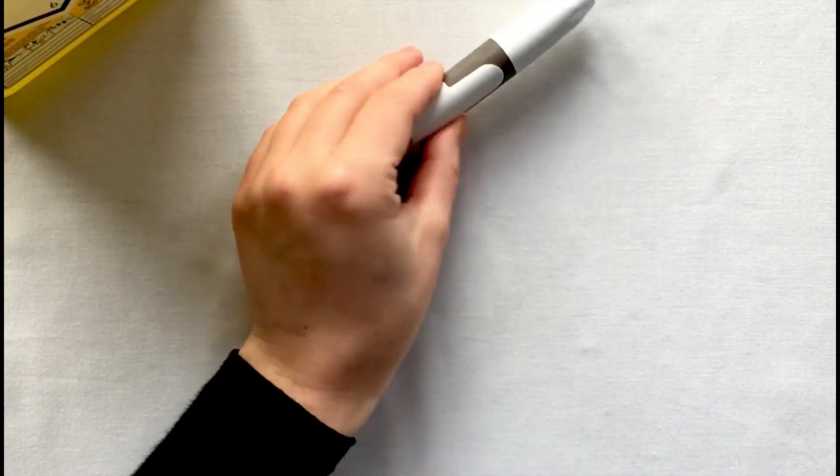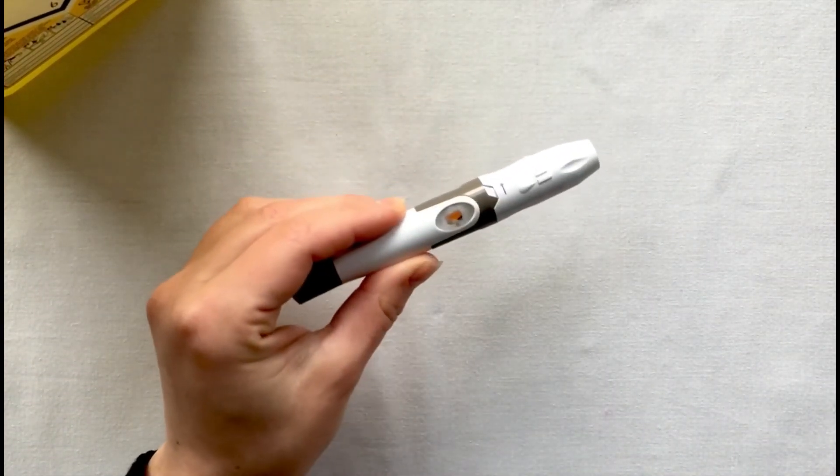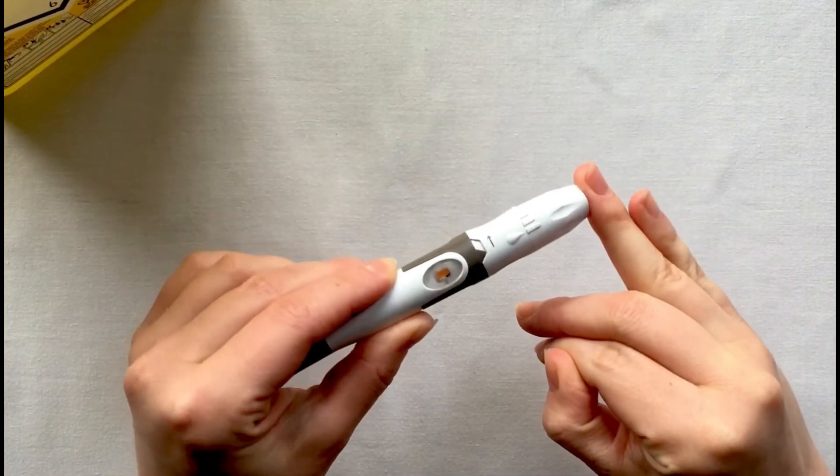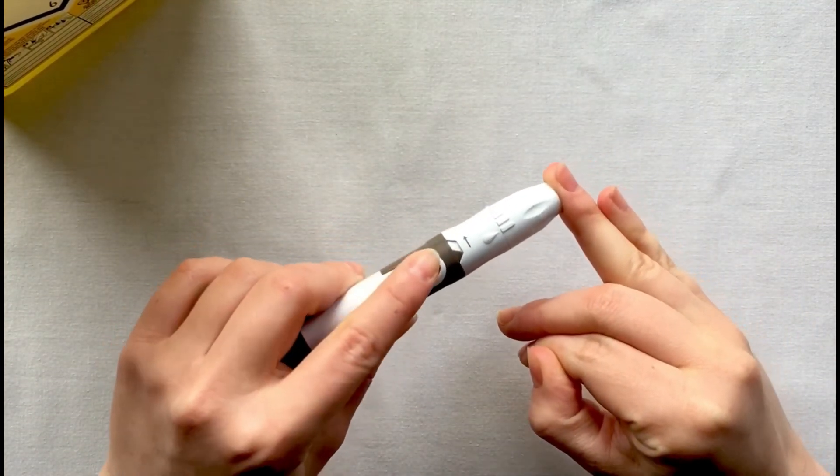Take your preset lancing device and hold the lancing device firmly against your puncture site. Apply pressure to the orange trigger button on the device.